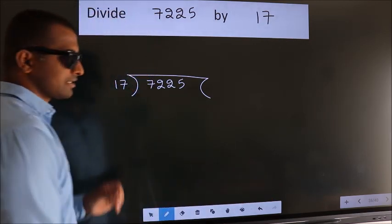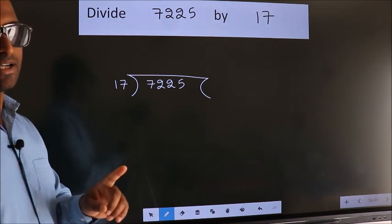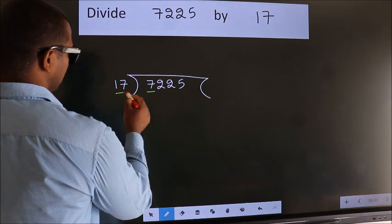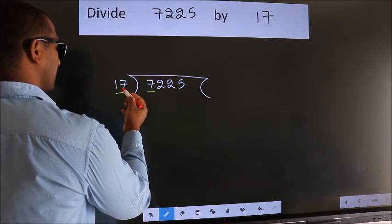This is your step 1. Next, here we have 7, here 17. 7 is smaller than 17.